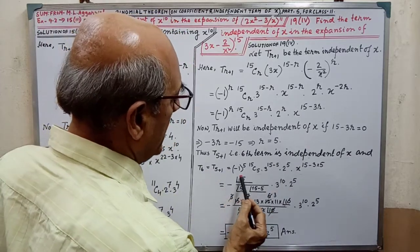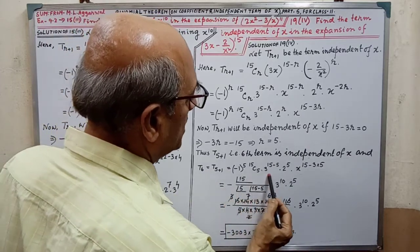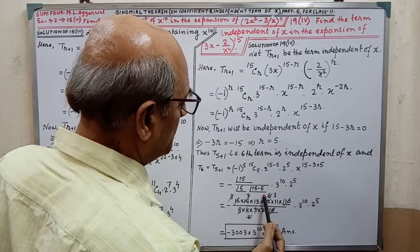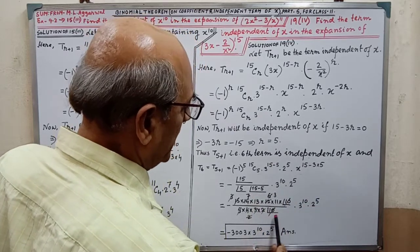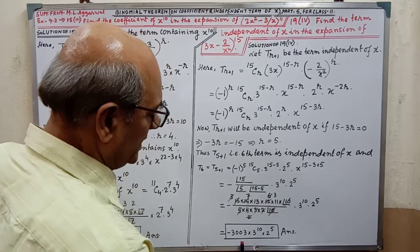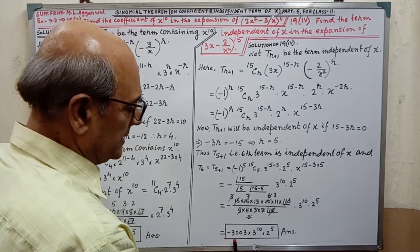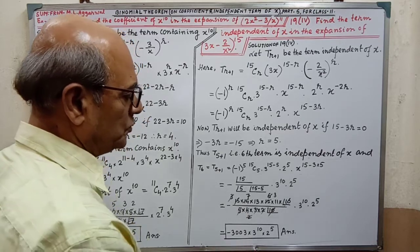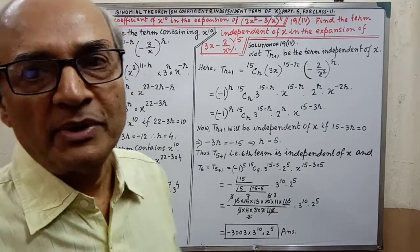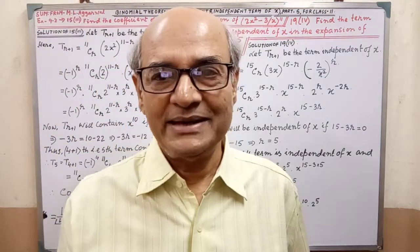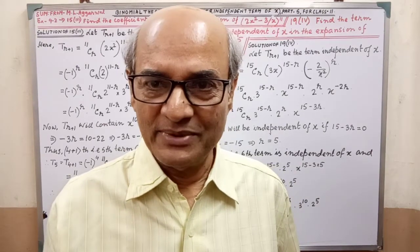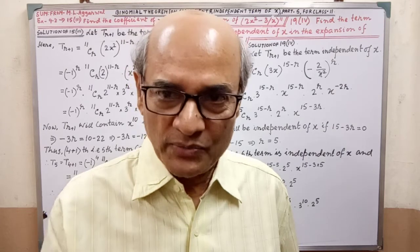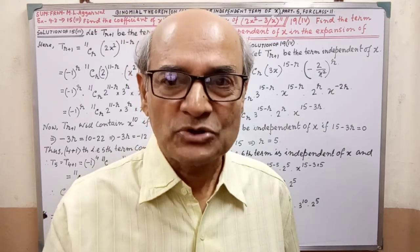And T6 equal to — by applying the formula, we are getting this expansion. We have to simplify more. By simplifying, finally that is minus 3003 into 3 to the power 10 into 2 to the power 5. And sum is completed — very simple. You just have to remember the formula and solution.